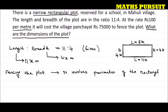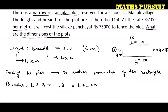Perimeter means the boundary of the given figure. For a rectangle, we add all boundary lengths: L + B + L + B, which equals 2L + 2B, which simplifies to 2(L + B). So the formula for the perimeter of a rectangle is 2 times (length + breadth).